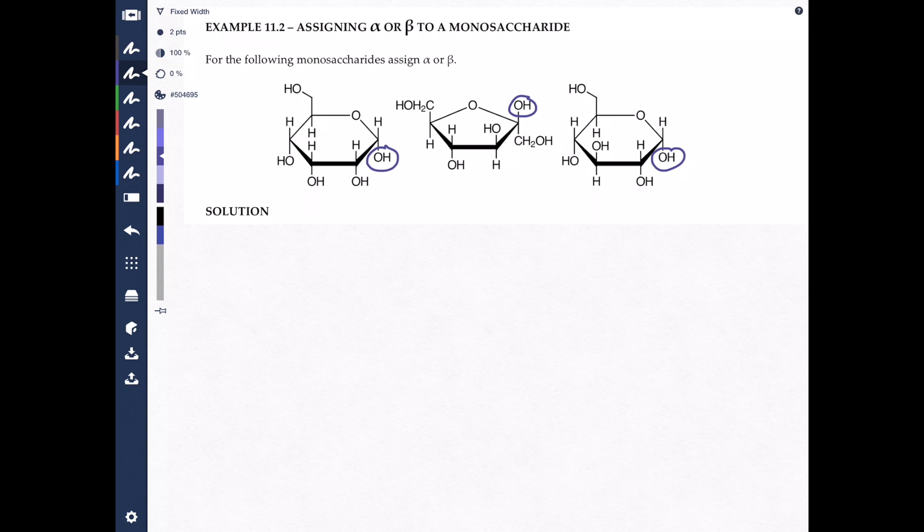In this case, the OH is pointing down. When the OH is pointing down, this is called alpha. Or if you want to write the Greek letter, the Greek letter is alpha. This is a sugar with the OH in the alpha position.